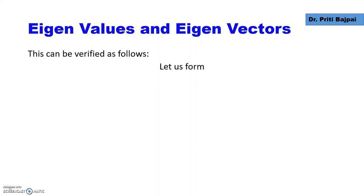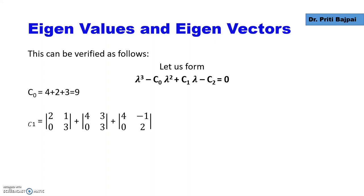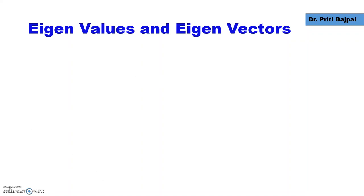We can always verify this using the formula: lambda cubed minus C0 times lambda squared plus C1 times lambda minus C2 equals 0. C0 is always the sum of the diagonals, C1 is the sum of the products of pairs of diagonal elements, and C2 is the determinant itself. When we calculate, we get C0 as 9, C1 as 26, and C2 as 24.